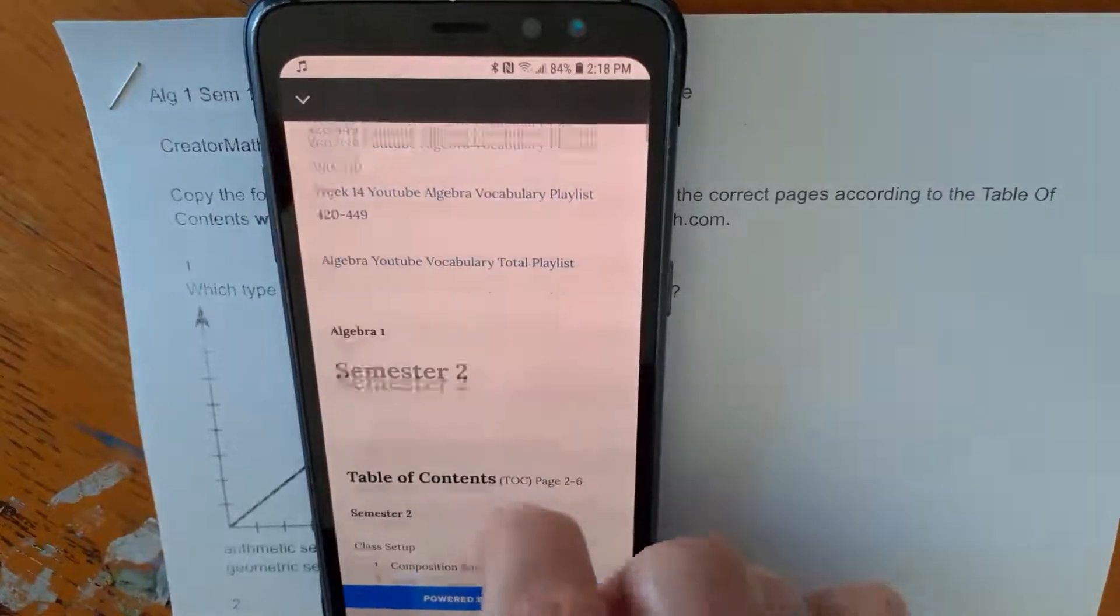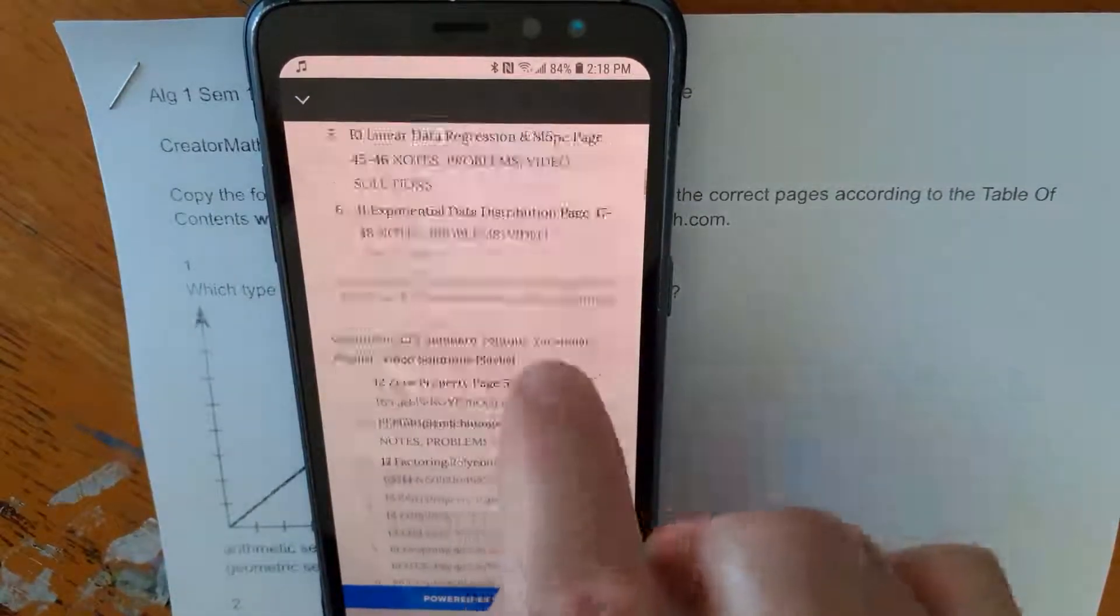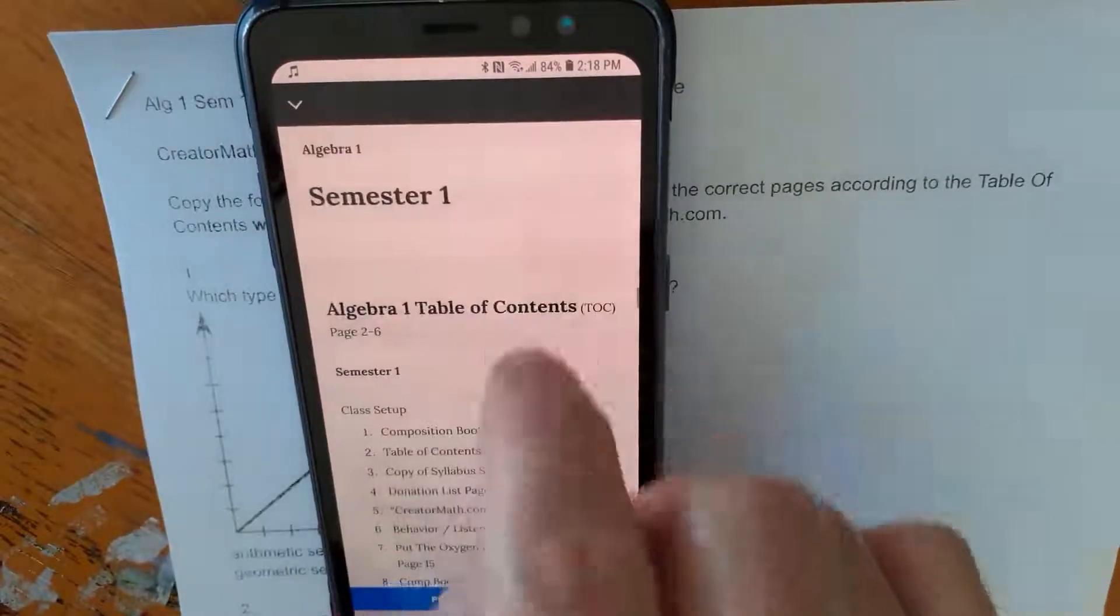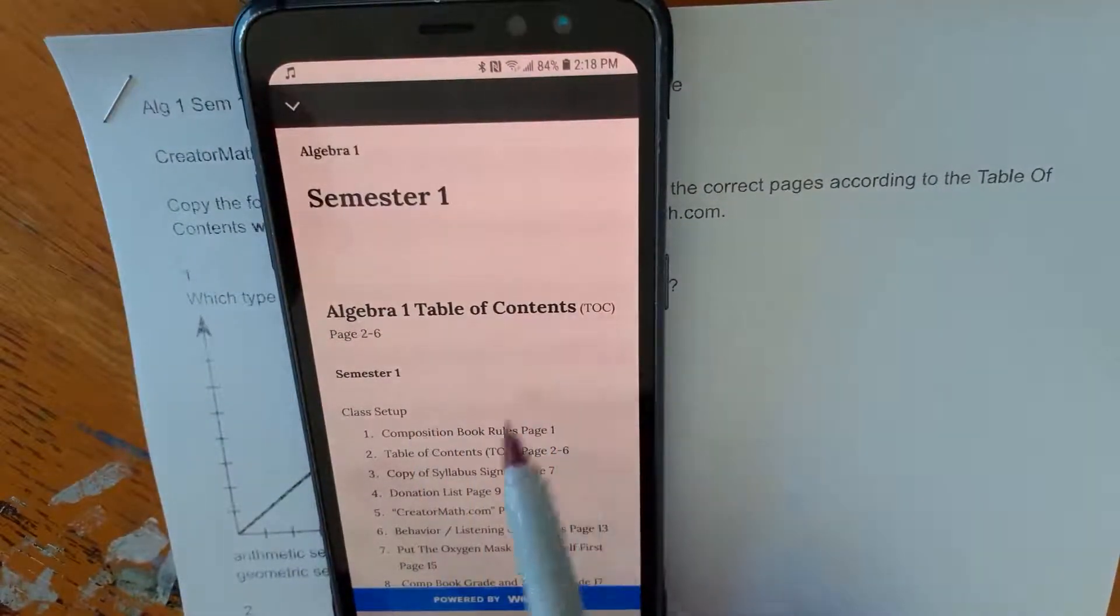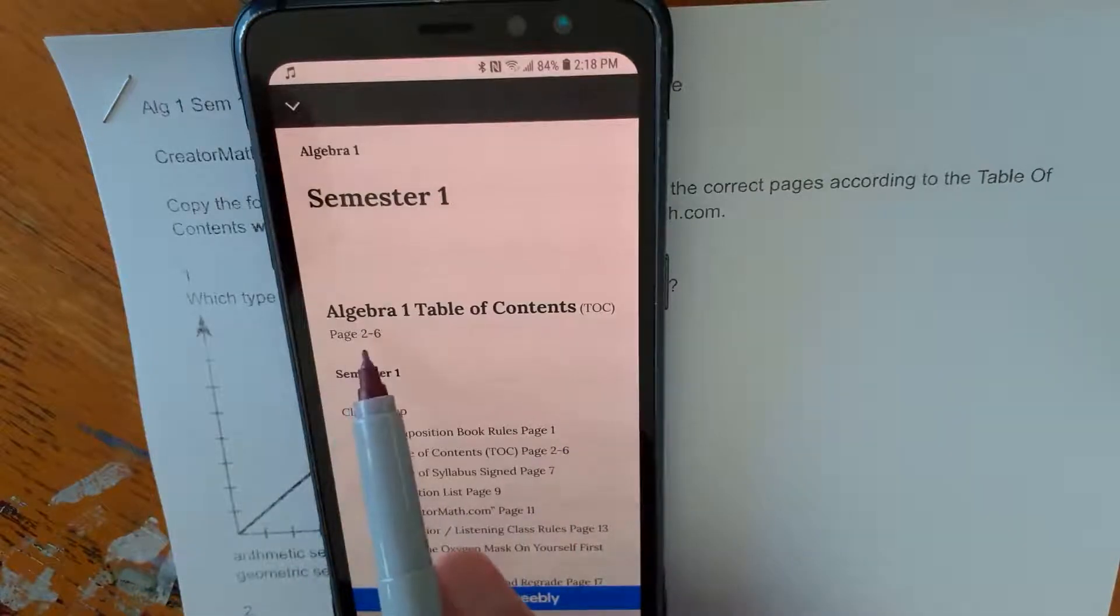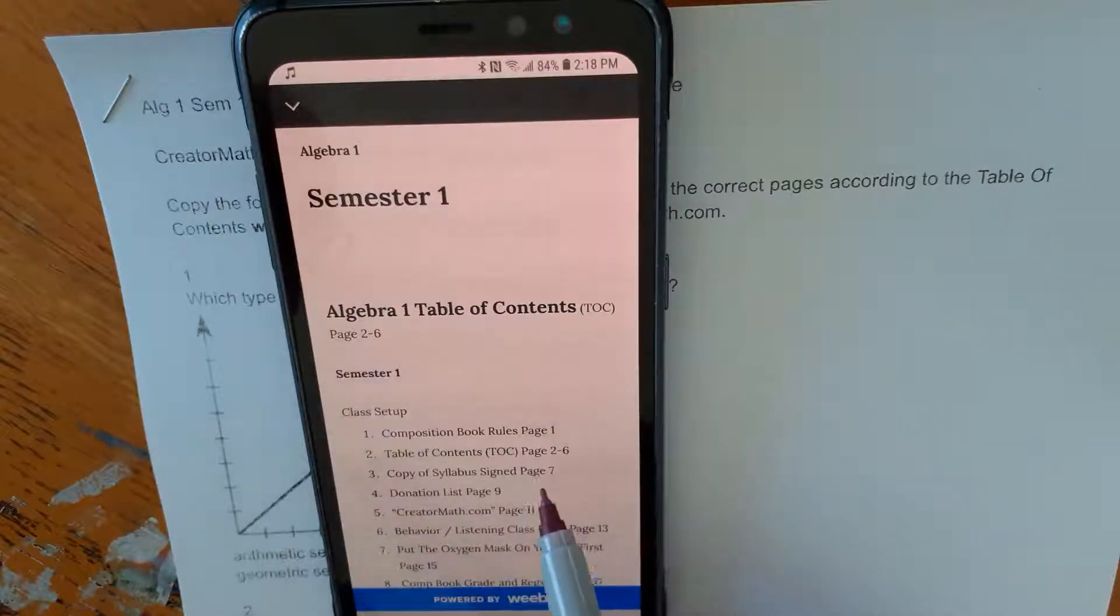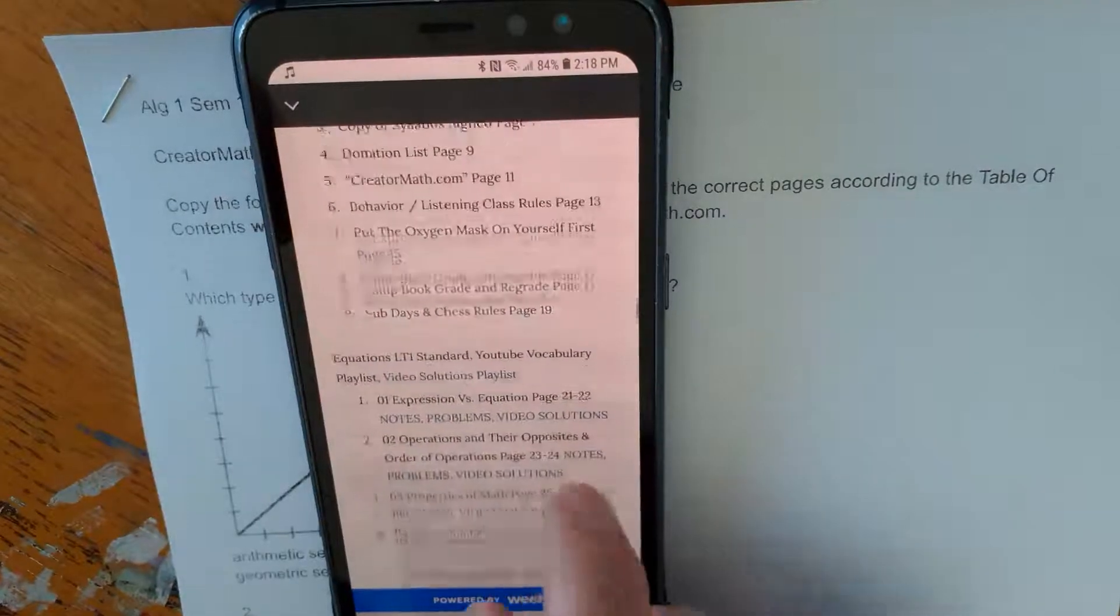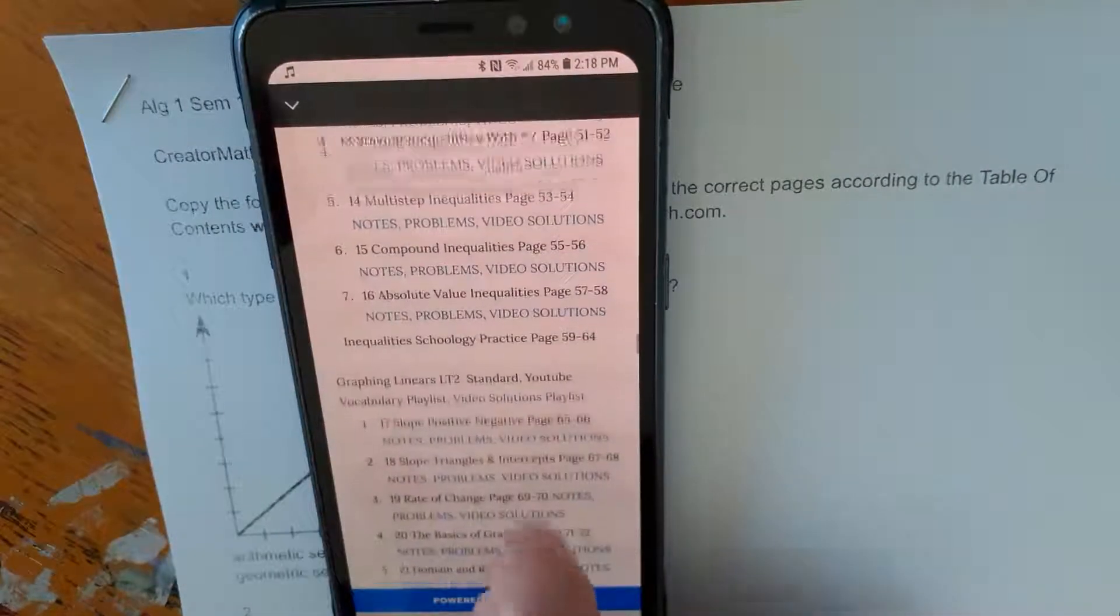It is important. We're going to go to the semester that we're in next or the one for this video in this case. The table of contents needs to be copied into your composition book on pages two through six. Why? Because it has all the page numbers of everything that goes in the comp book, so you can put the right items on the right pages. We're going to now go from semester, make sure we got that. Now we're going to go down to the unit.